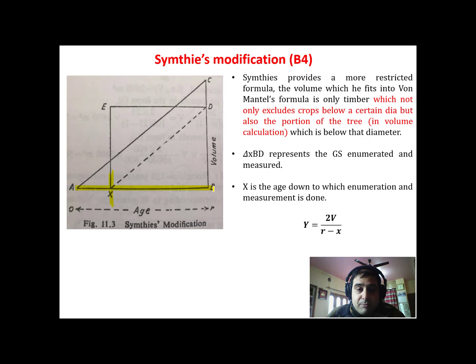Now the second point which he told: the portion of the tree which is above a certain diameter also belongs to the same category, so that has also to be excluded.